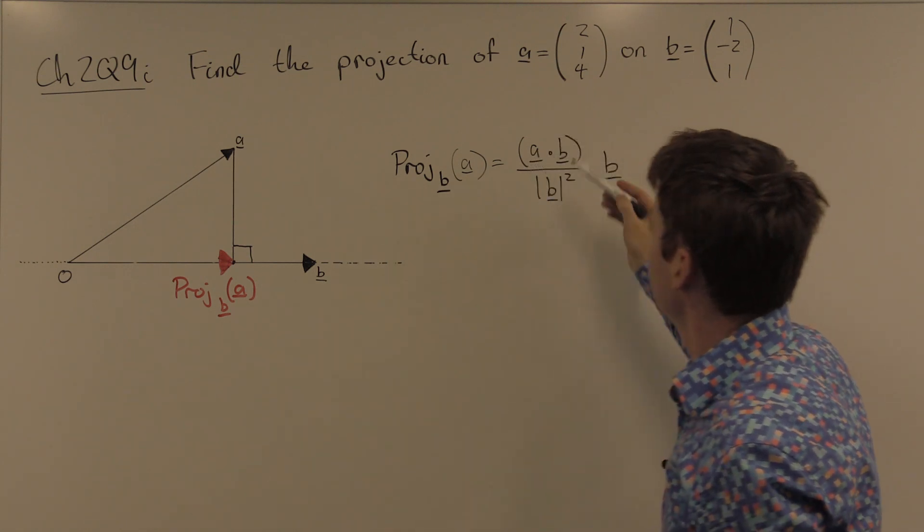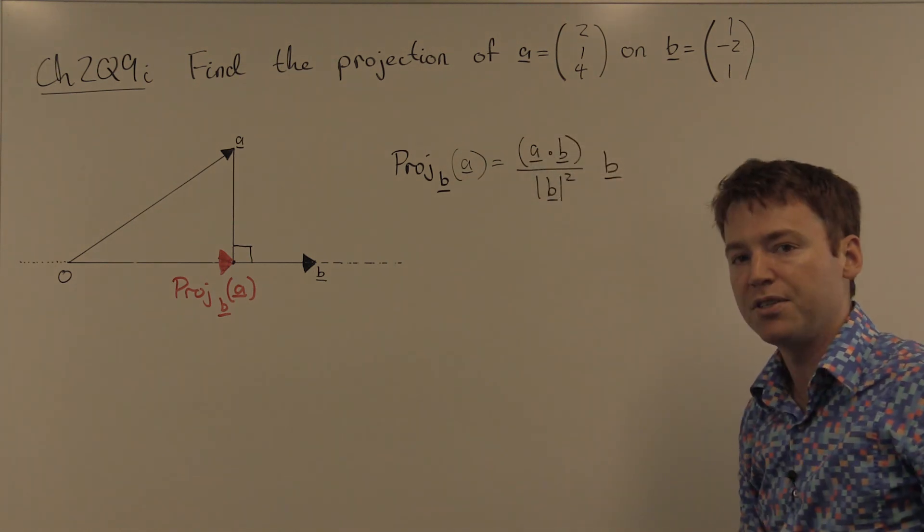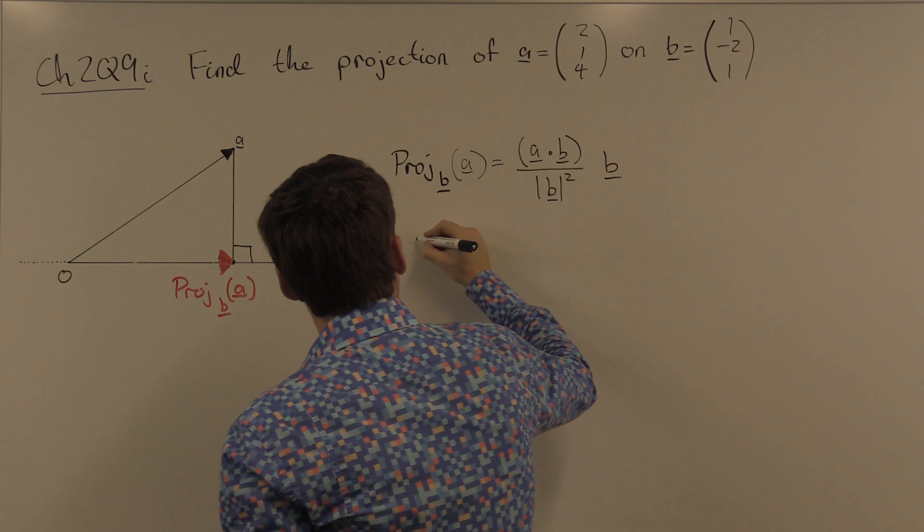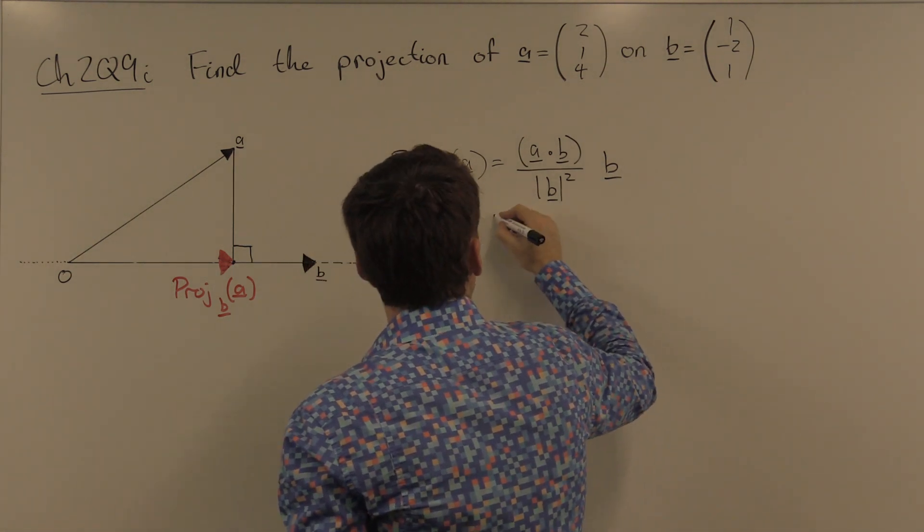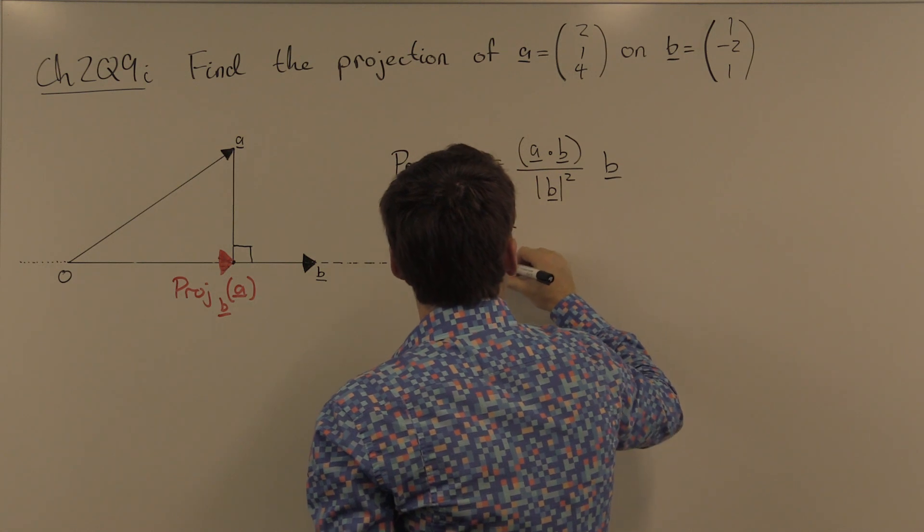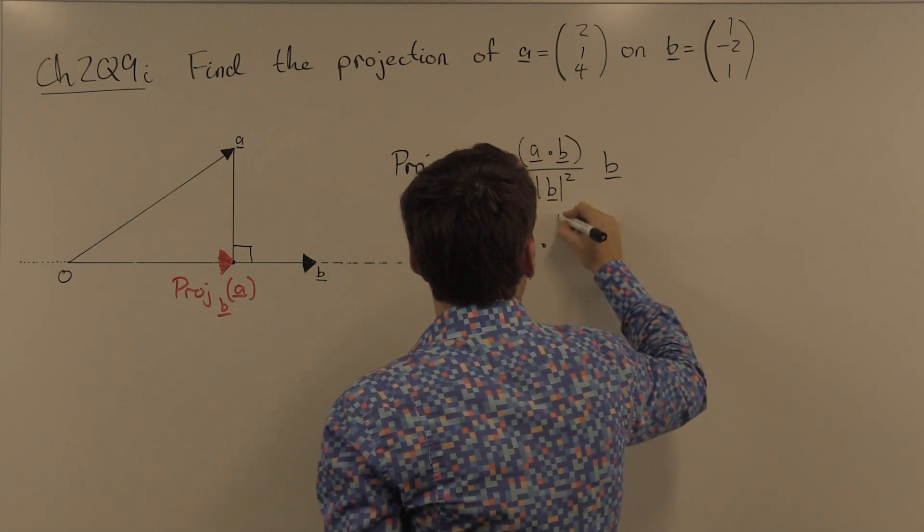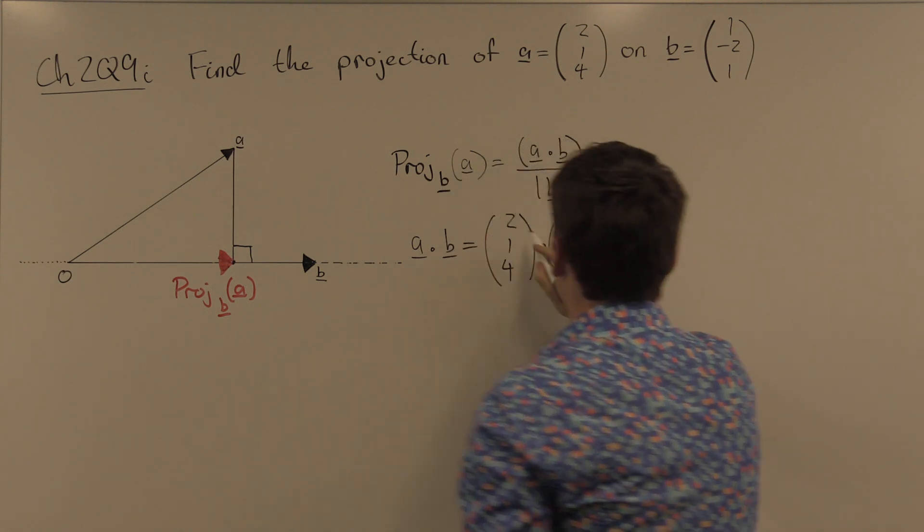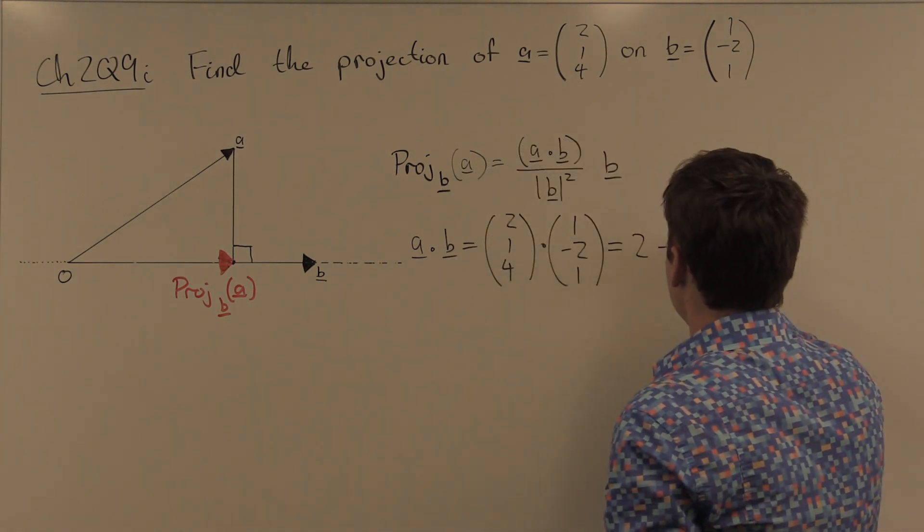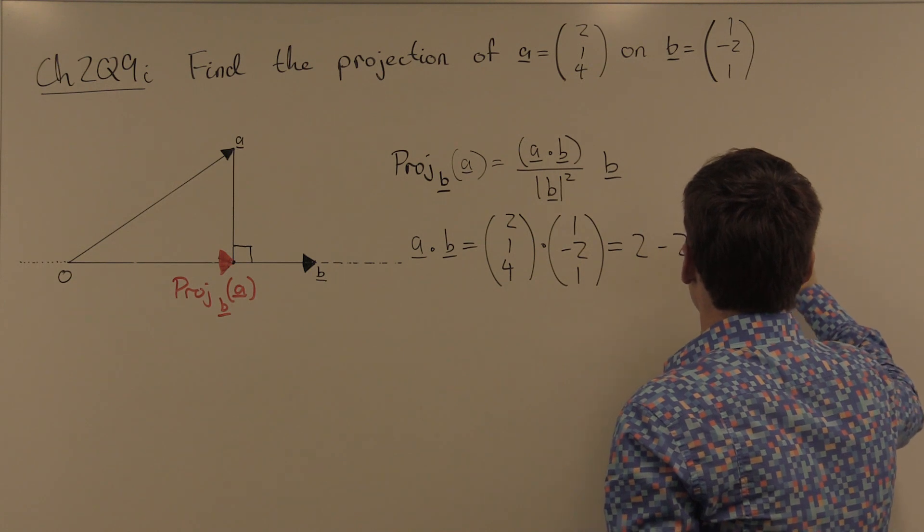Well, we need two things. We need a dot b and length b squared. a dot b is equal to (2, 1, 4) dotted with (1, -2, 1), which is equal to 2 minus 2 plus 4, which is 4.